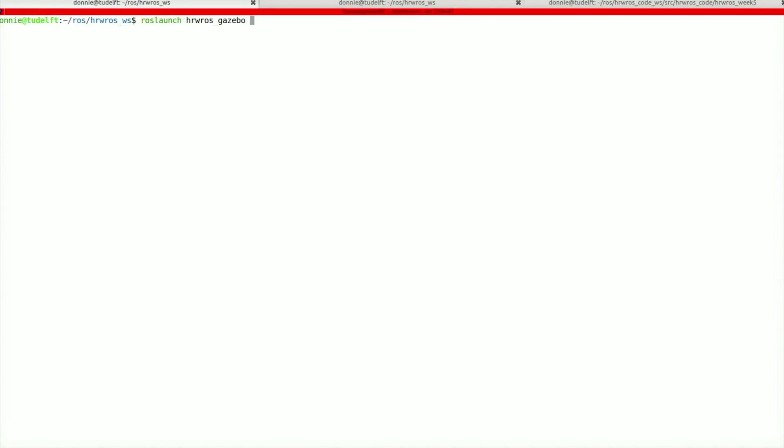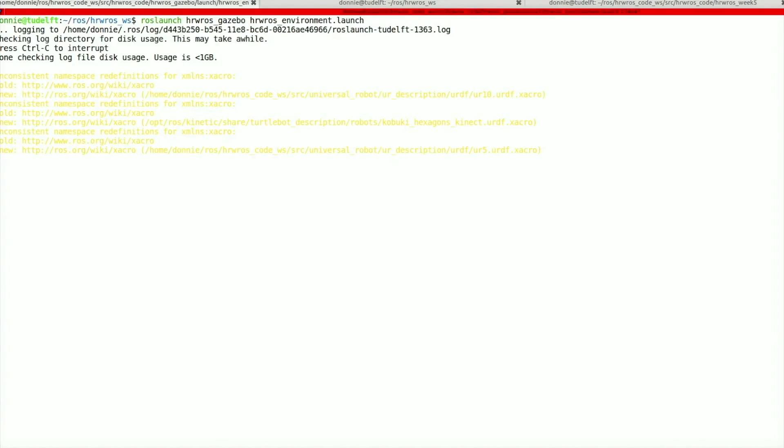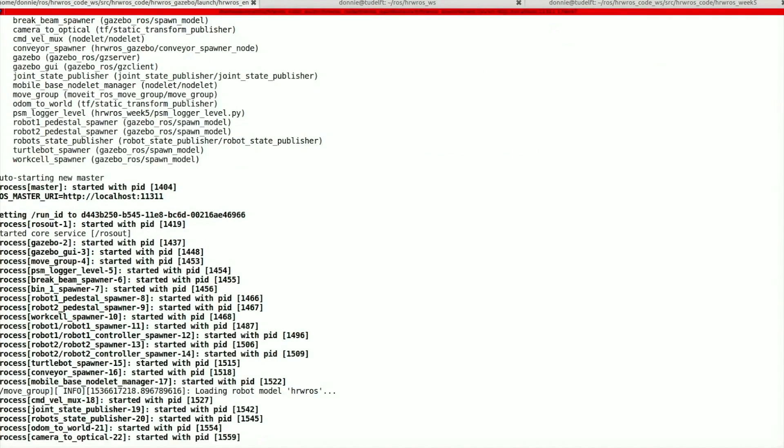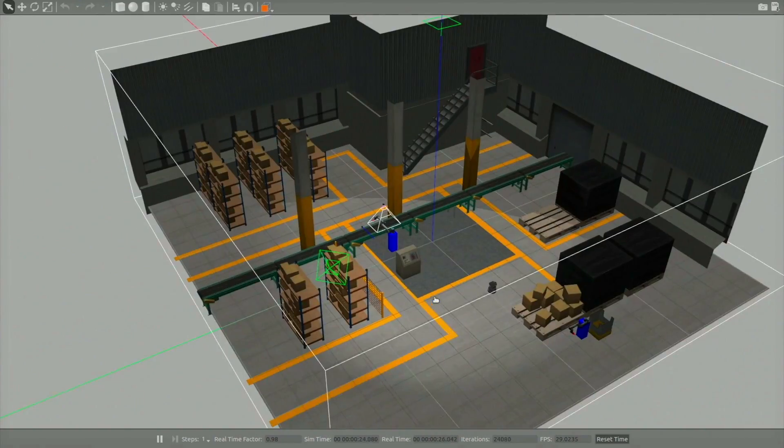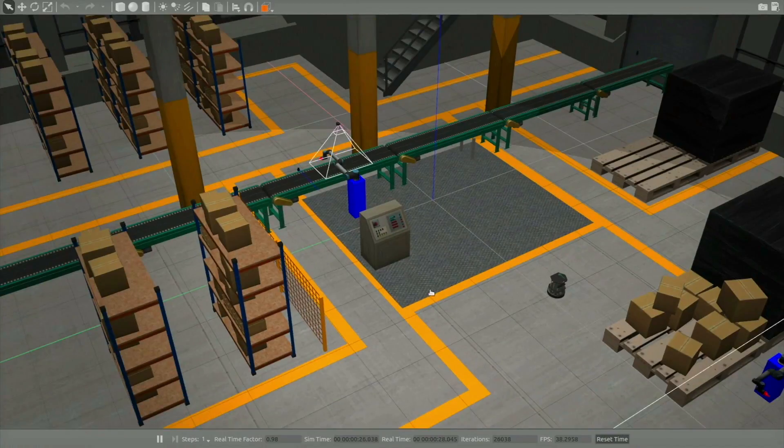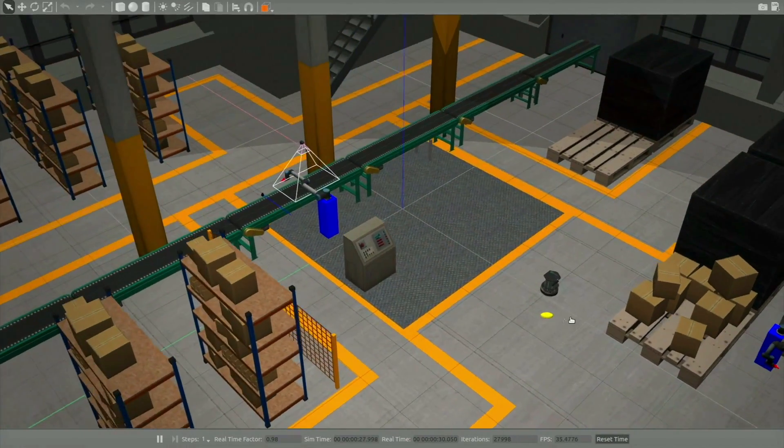We start the factory simulation using the hrwros-environment.launch as we have done all this while, and as we can see, after the launch is complete, we have our two robots and the turtlebot in the scene.